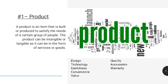First is product. A product is an item that is built or produced to satisfy the needs of a certain group of people. The product can be intangible or tangible, as it can be in the form of a service or goods. You can think about design, technology, usefulness, convenience, quality, accessories, and warranty.